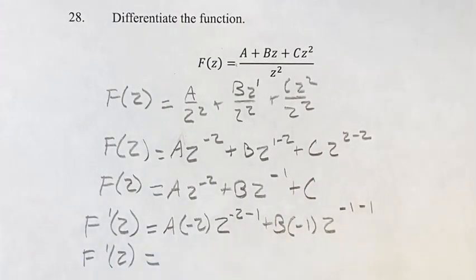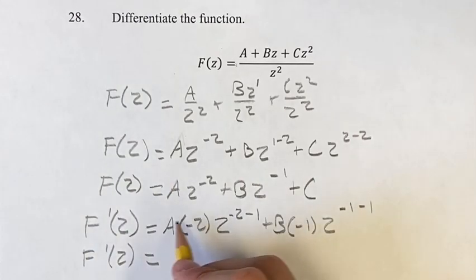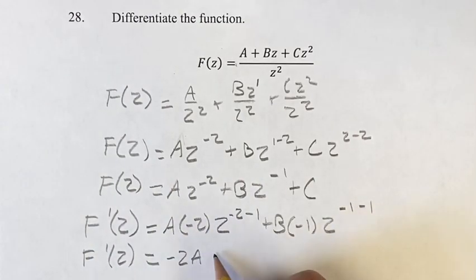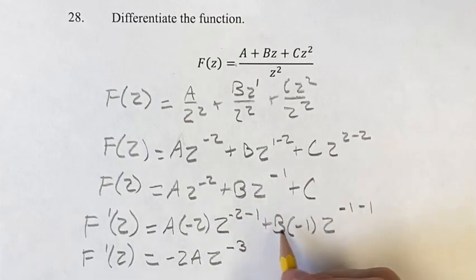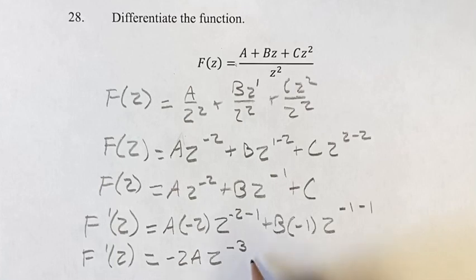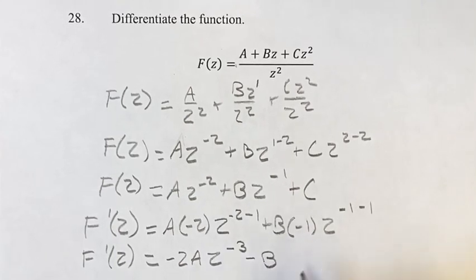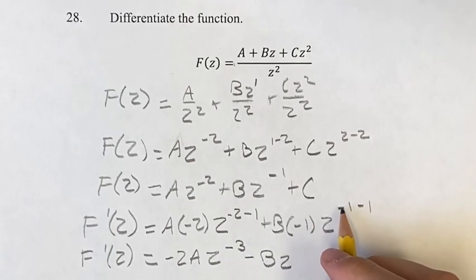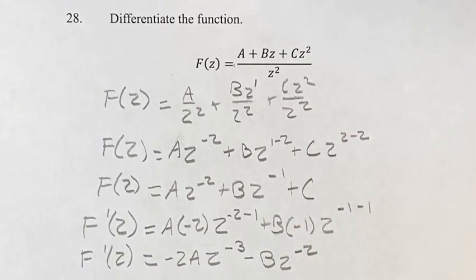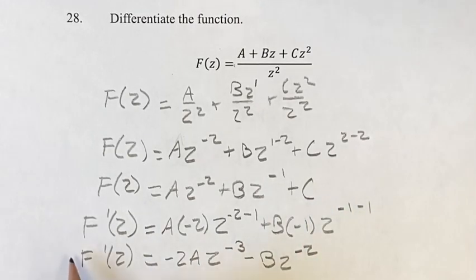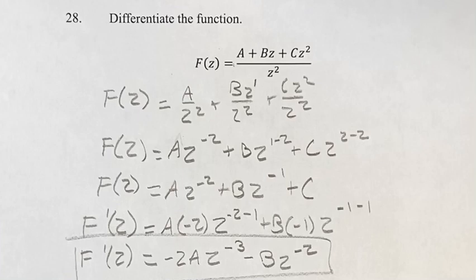Simplifying: a times negative 2 is negative 2a, z to the negative 2 minus 1 is z to the negative 3. Then b times negative 1 is minus b, times z to the negative 1 minus 1, which is z to the negative 2. The derivative of the constant c is just 0, so the final answer is f prime of z equals negative 2a times z to the negative 3, minus b times z to the negative 2.